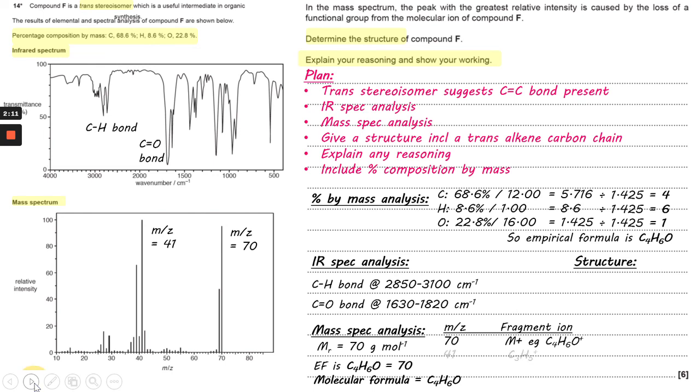The m/z = 41 fragment ion is C₃H₅. Looking at the ratio of C₃H₅, there must be a double bond somewhere in order to have such a low number of hydrogens for three carbons. Therefore, that's where our alkene part of the molecule will sit, giving a trans alkene carbon chain.